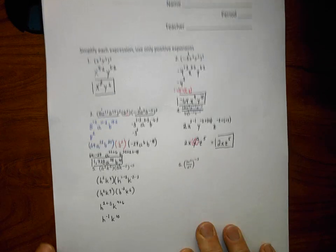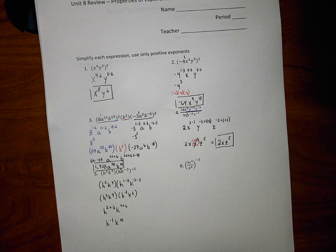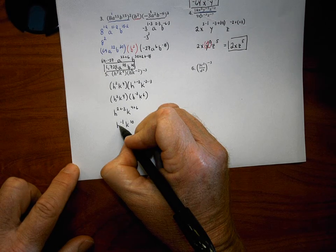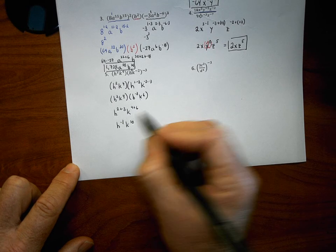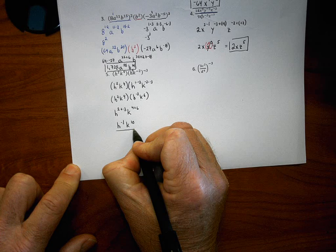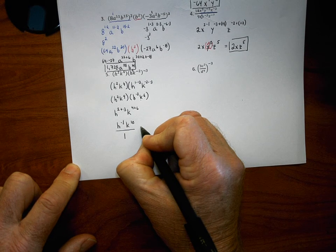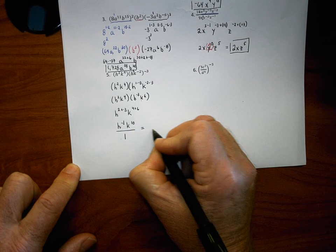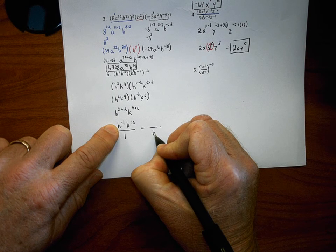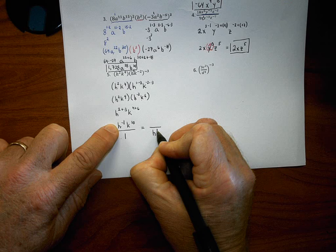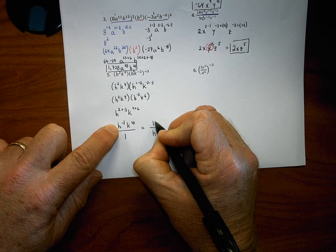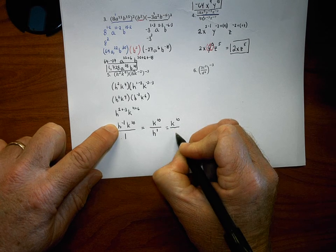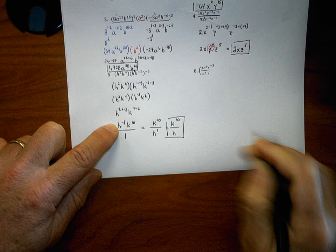The answer is h to the negative one k to the tenth, but the instructions say to use only positive exponents, so this is not the final answer. The rule is: treat the expression as a fraction over one. If a negative exponent is in the numerator, move that base down to the denominator — and when you move it, the negative one exponent becomes positive one. K stays in the numerator. The correct final answer is k to the tenth over h.